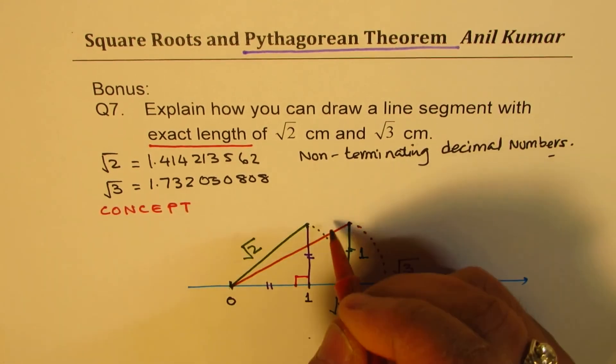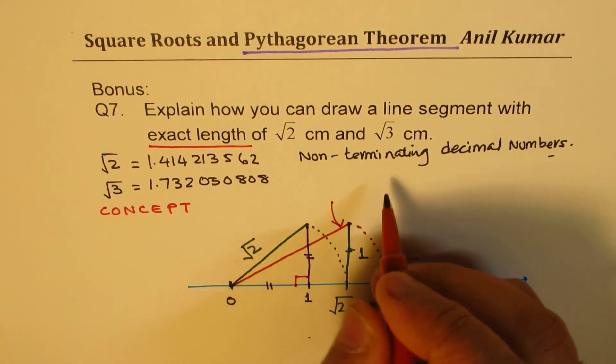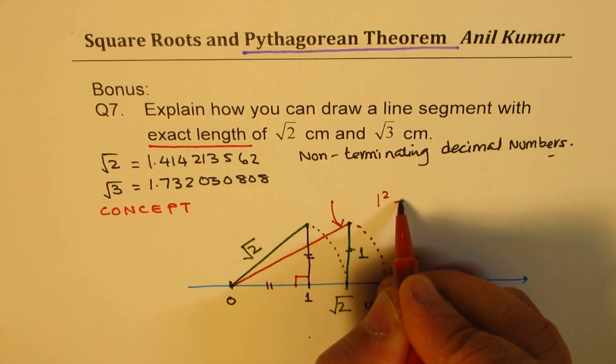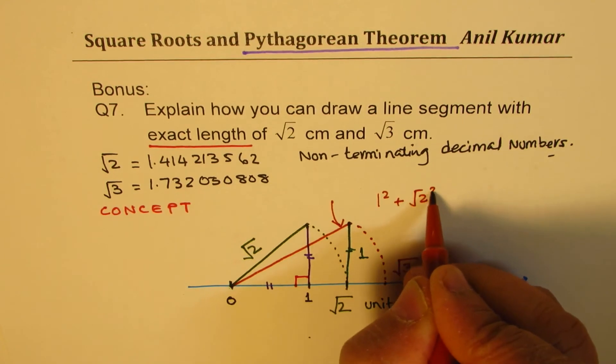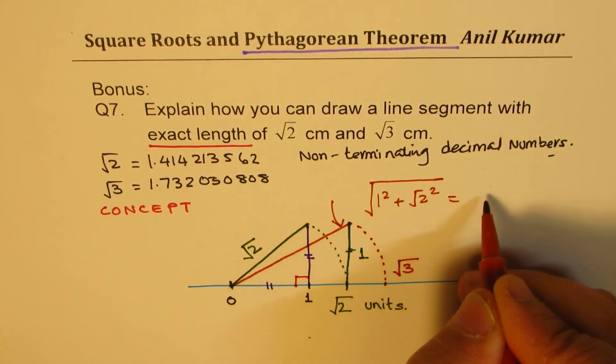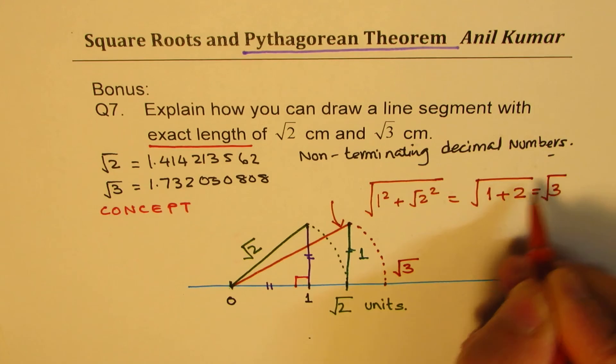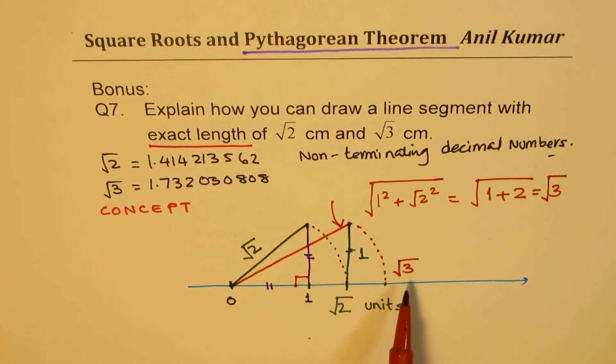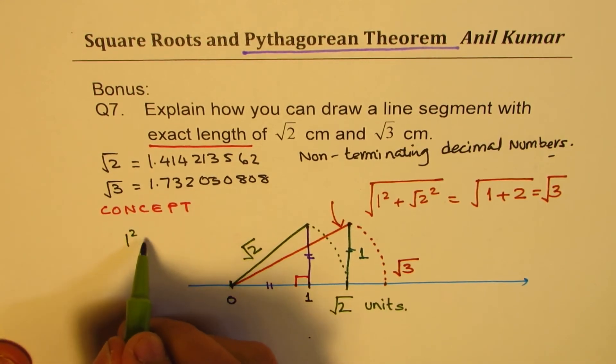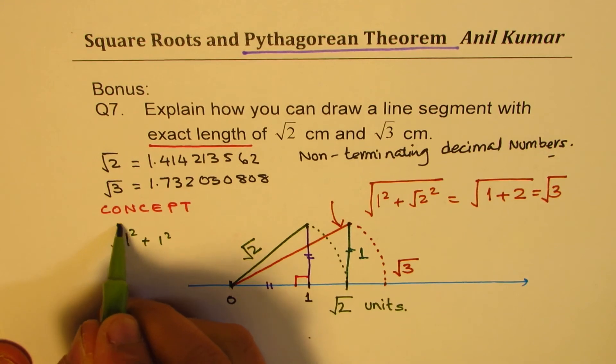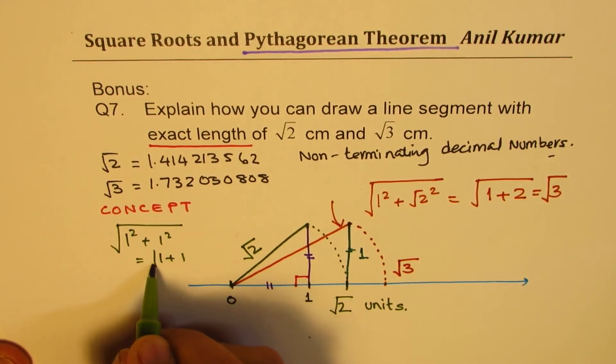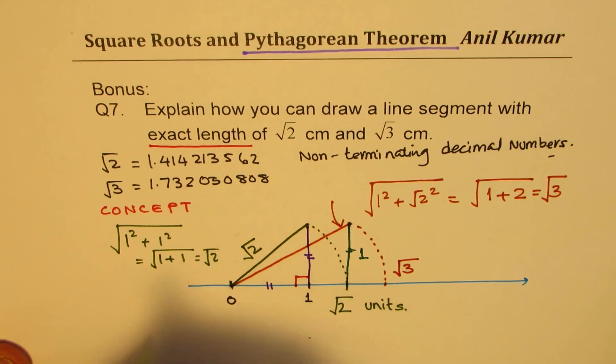Do you see that? This side will be equal to 1 square plus square root 2 square, square root. Now, 1 square is 1. Square root 2 square is 2. And so we get square root 3. Does it make sense to you? That is how we are going to get square root 3. And how did we get square root 2 earlier? We got 1 square plus 1 square square root, which was equal to 1 plus 1 square root or square root 2.